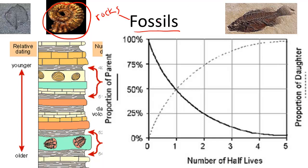So first, what is a fossil exactly? A fossil is a preserved impression, or remains, of past organisms in rock form — any preserved evidence will do. Paleontologists study fossils. Though almost 99% of the species on Earth have become extinct, only a small percentage of those species are preserved as fossils.